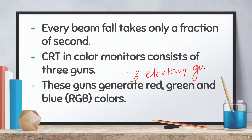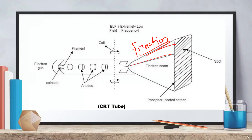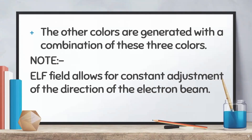For a color monitor, three electron beams are used. The three colors are Red, Green, and Blue. These three colors are generated by the electrons, and all other colors are generated through combinations of these three colors.